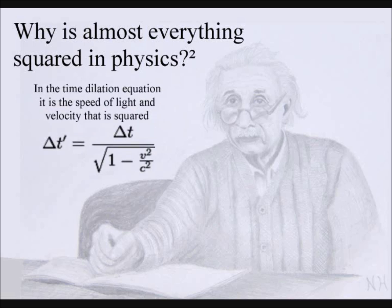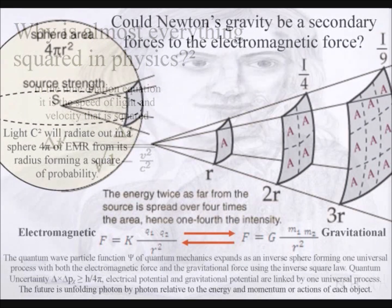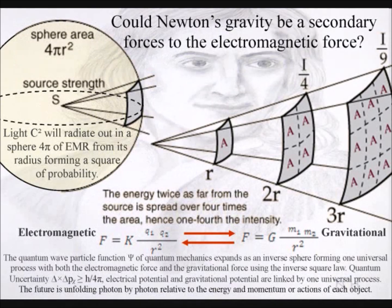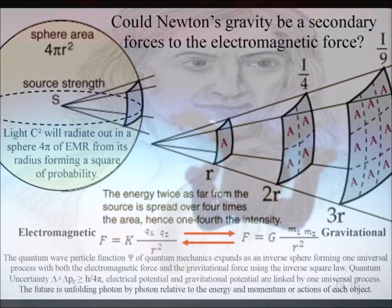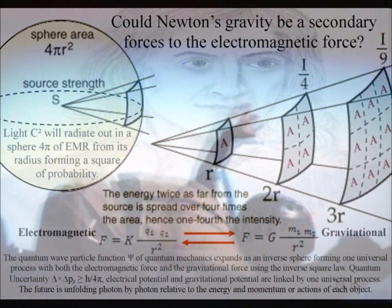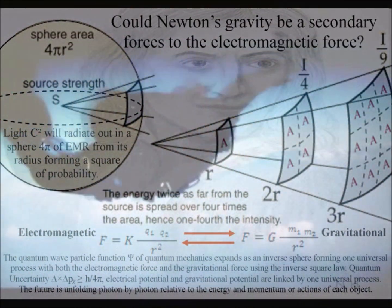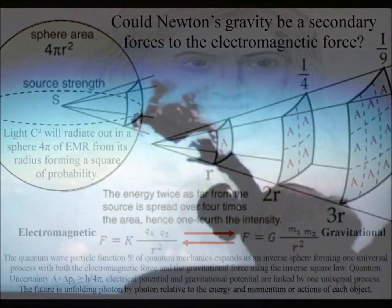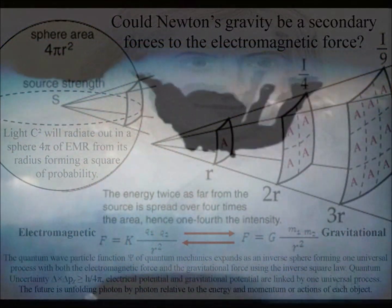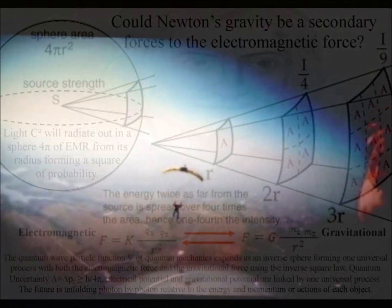It is normally the speed of light and velocity that are squared. But what is significant is that the inverse square law does not just apply to Newton's universal law of gravitation, it also applies to electromagnetic light. This video will put forward the idea that gravity is a secondary force to electromagnetism, with the whole of physics being based on one geometrical process.